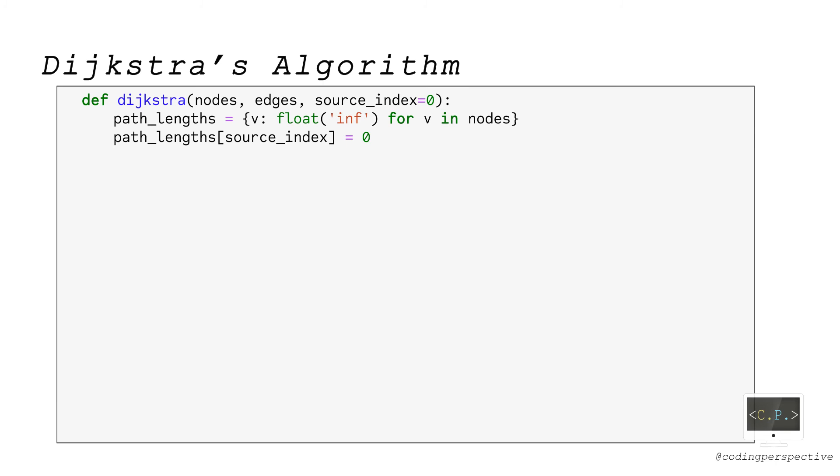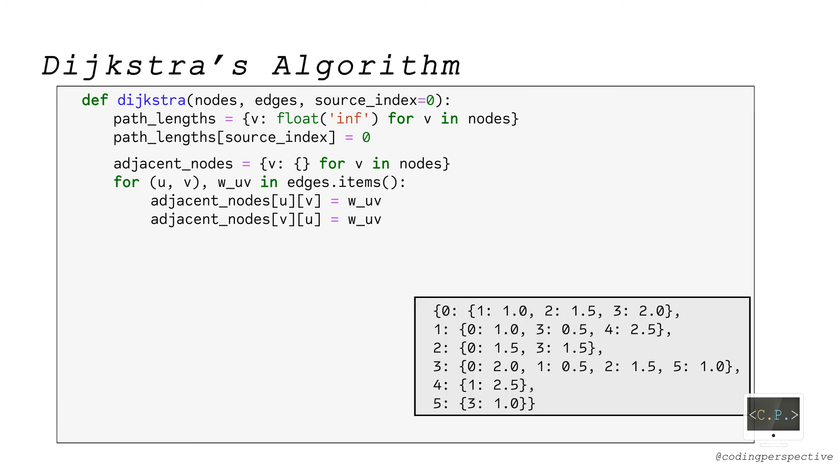We first initialize the path length for each node by assigning it to infinity except the source node. Then we initialize the adjacent nodes dictionary with keys being the nodes and values being another dictionary of the corresponding node. The keys of this subdictionary are the adjacent nodes of the corresponding node and the values are the distances between them. Here how it looks like for our small problem.